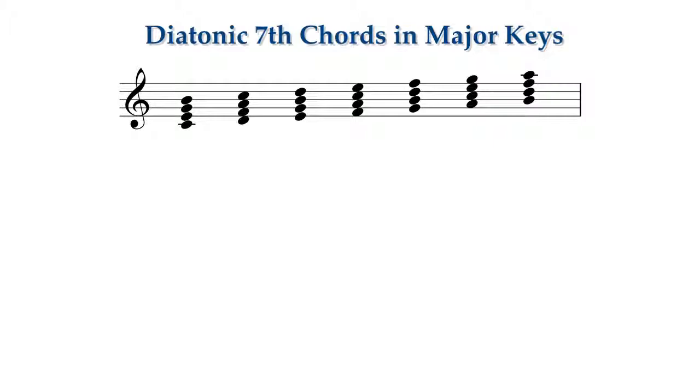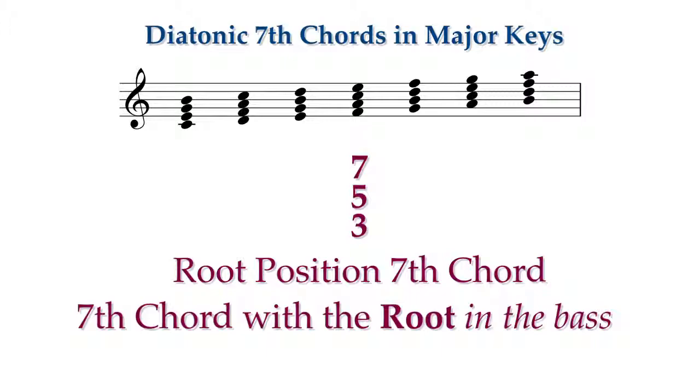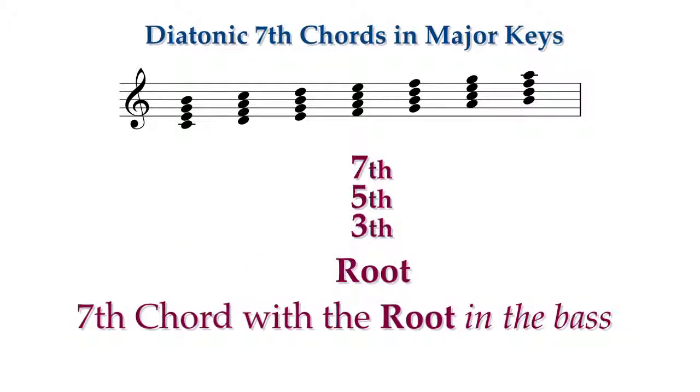Since there are now three notes above the bottom note, our complete figured base will now have three numbers instead of two. The complete figured base for a root position seventh chord is 7-5-3. This new chord member is called the seventh.